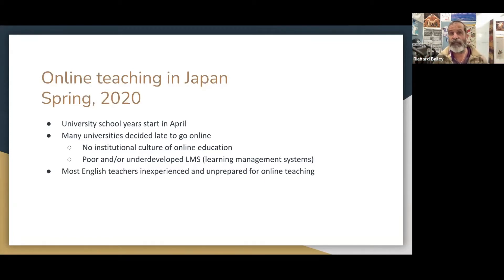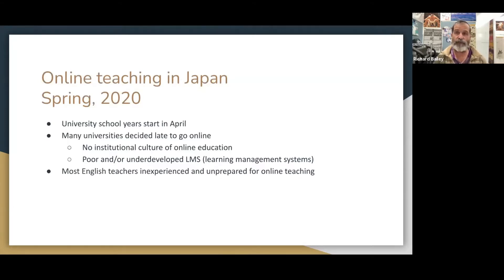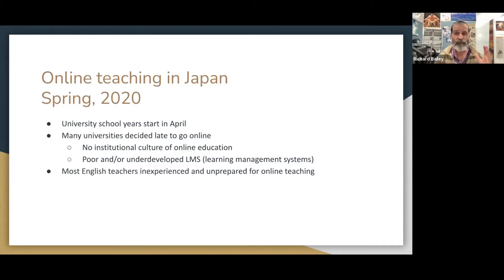Some of the problems: Japan does not have a culture of online education. They're very low-tech in a lot of ways, and most universities had very bad LMS or learning management systems. In fact, my university's system was so bad that when they started using it, it broke down because it couldn't handle the volume of students accessing it. A lot of teachers in Japan don't have much experience with technology and online teaching — it wasn't just the students and infrastructure, it was also the educators as a group.